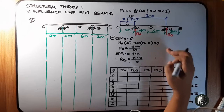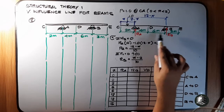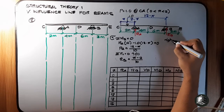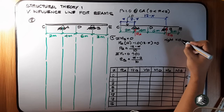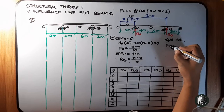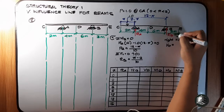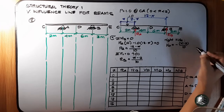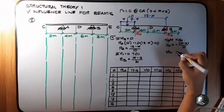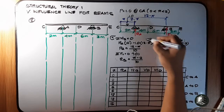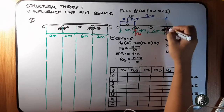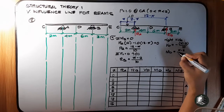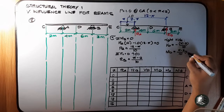For shear at D, we take the right side. RB is upward, so it is negative: shear at D equals negative (X minus 2) over 10. For moment at D, RB rotates counterclockwise at D — counterclockwise is positive on the right side — so moment at D equals positive (X minus 2) over 10 multiplied by moment arm 6.